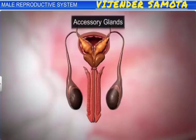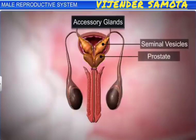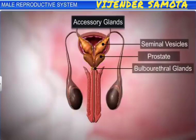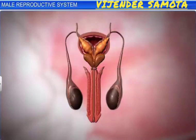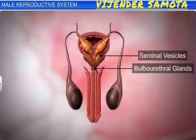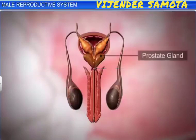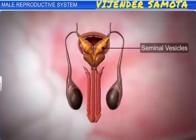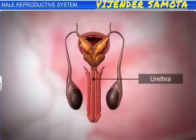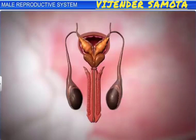The male accessory glands include a pair of seminal vesicles, a prostate, and a pair of bulbourethral glands. They secrete seminal fluid that contains fructose and prostaglandins. The prostate gland is present at the base of the urinary bladder, around the base of the seminal vesicle. It opens into the urethra through many ducts. The prostatic fluid contains calcium, citrate, and phosphate ions.